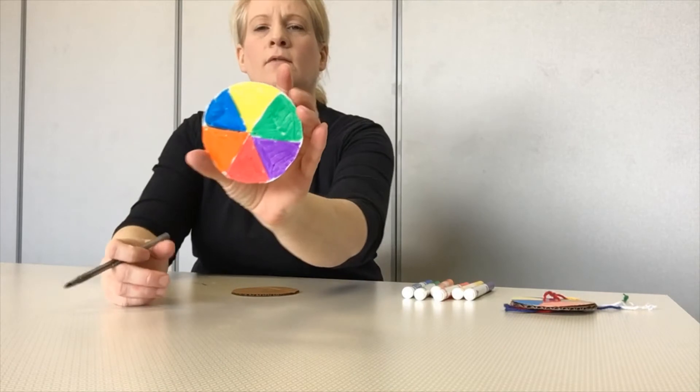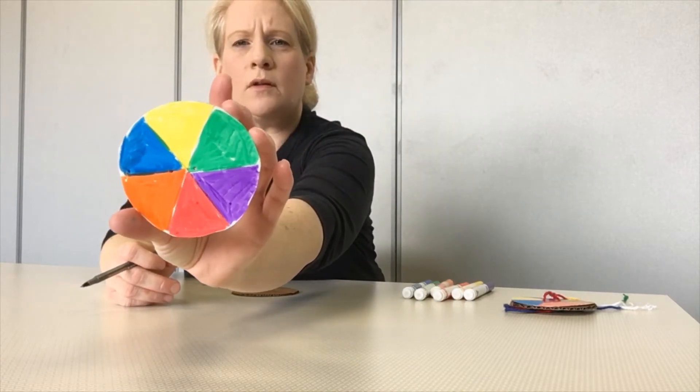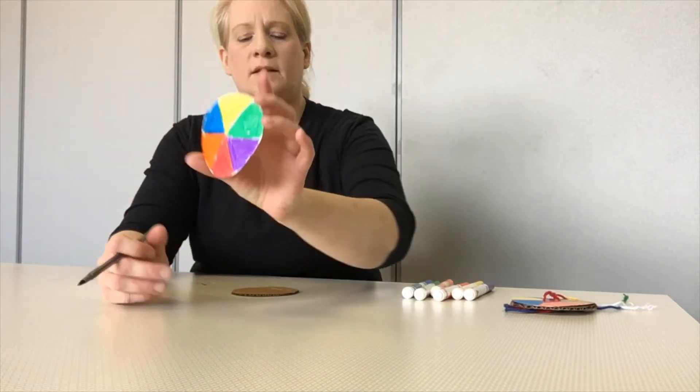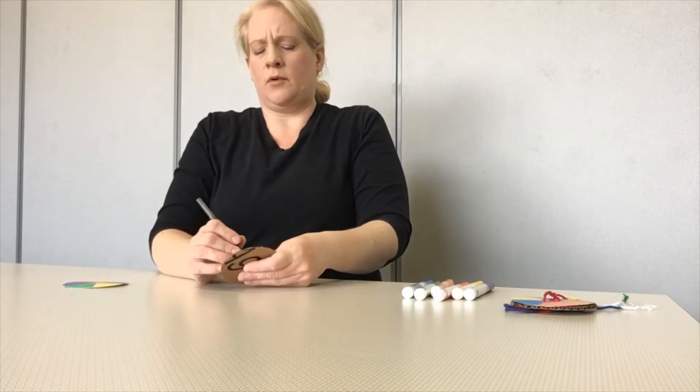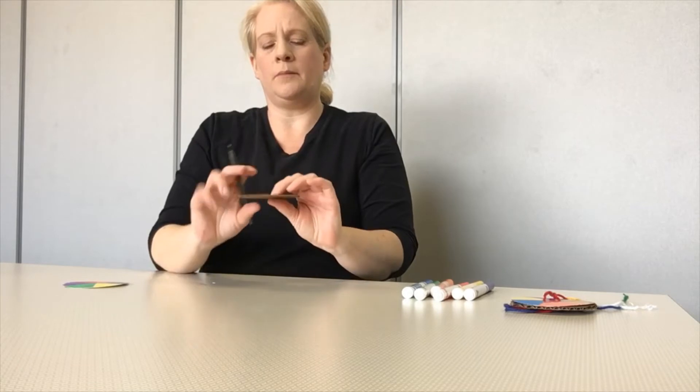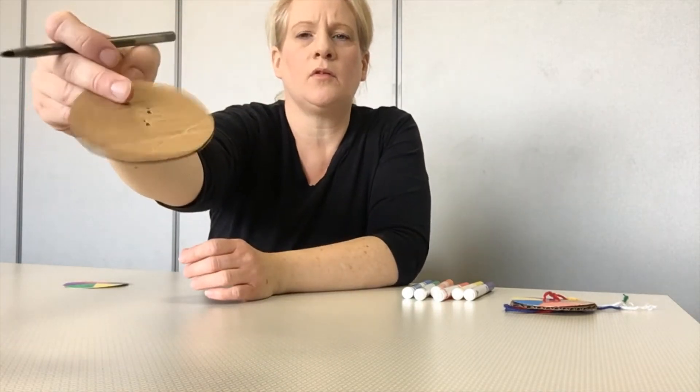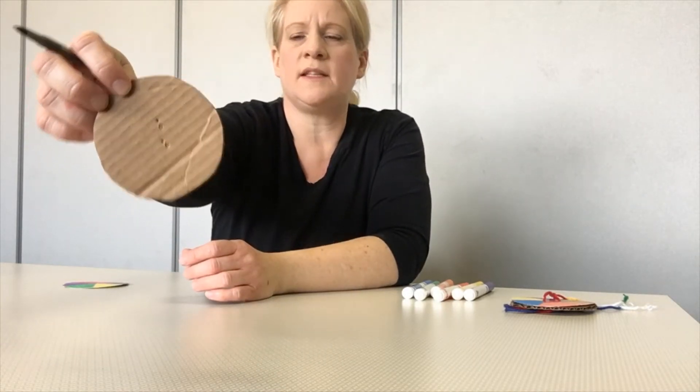Now, you can see, if you look closely, we've got a couple of little holes in the middle of our circle, about a centimeter apart. You might need to use your pen to poke into the cardboard a little more. You can see we've got a couple of holes in our cardboard as well, about a centimeter apart.